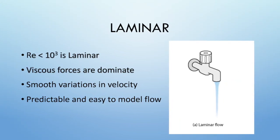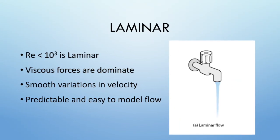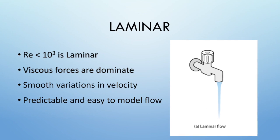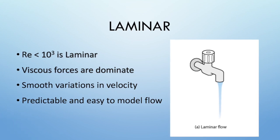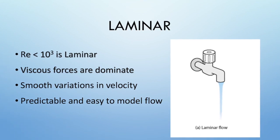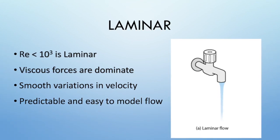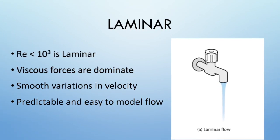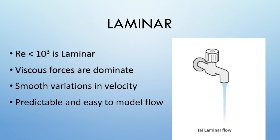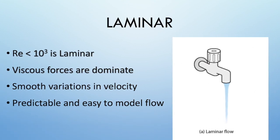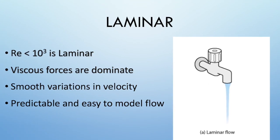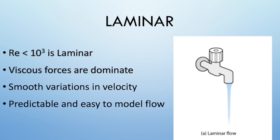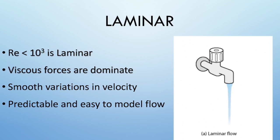Laminar flow is very uncommon to be seen in real life. It occurs when the fluid's viscous forces are greater than the fluid's inertia forces. When Reynolds number is less than 10 to the third, the flow is considered laminar. Laminar flow is smooth and predictable, and as seen in the picture on the right, the streamlines are steady and constant.